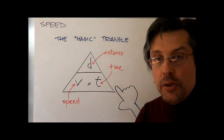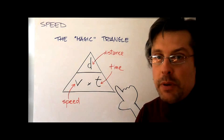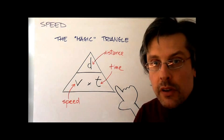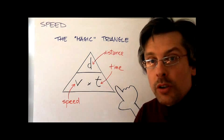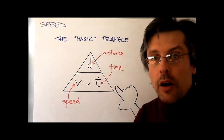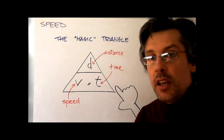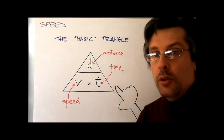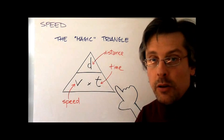Now, so far we've used the formula distance over time to find the speed, but what if a problem asks you to find the distance or to find the time? Now, if you don't feel so comfortable with algebra, there's a very easy way to solve your problems, and that is what we call the magic triangle.